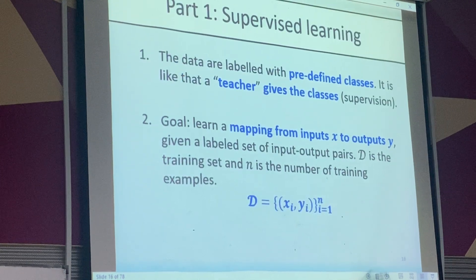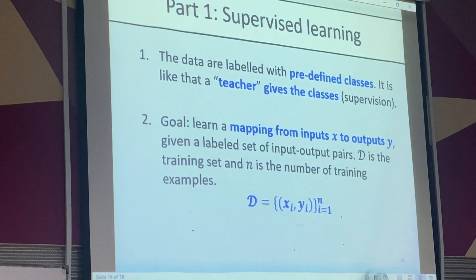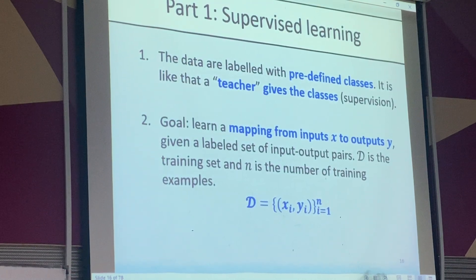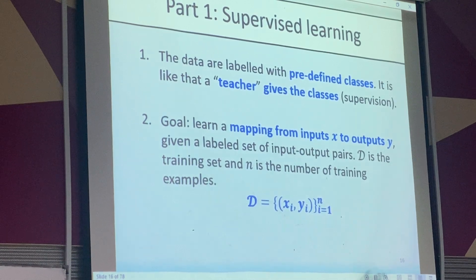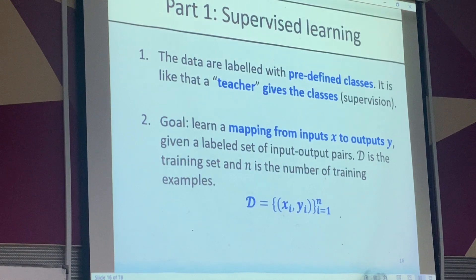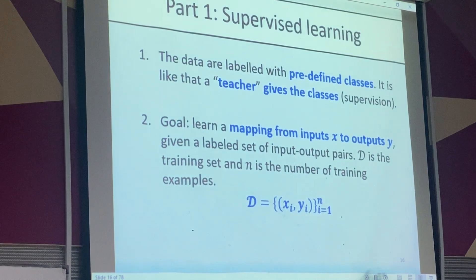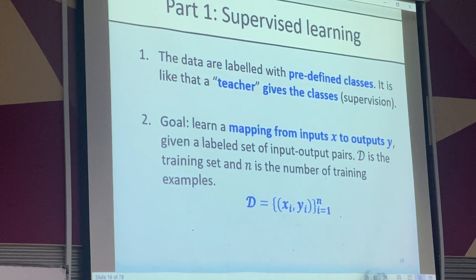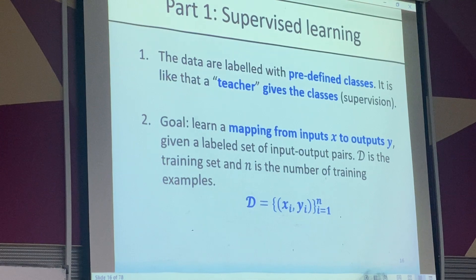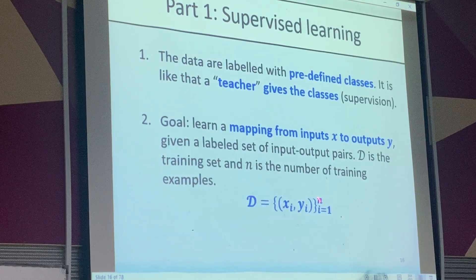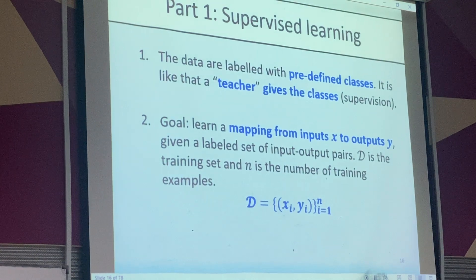Why is it called supervised machine learning? Because we provide the labels — the labels are like the answer. You can't just provide features; you also need to provide the label. That's called supervised: we supervise the machine, telling it whether it's learning the correct labels. In the equations, X stands for features and Y stands for the label.